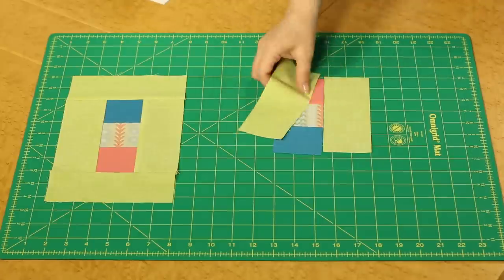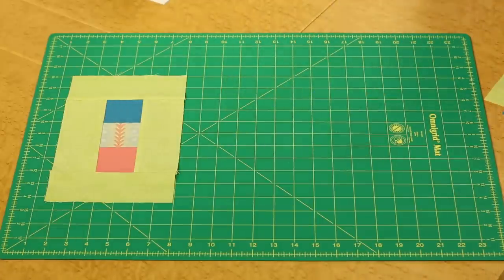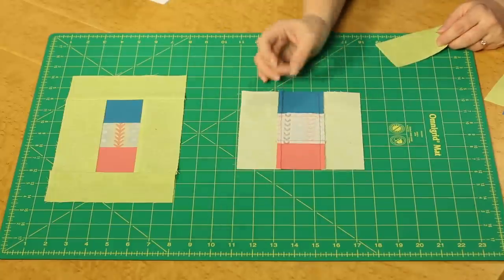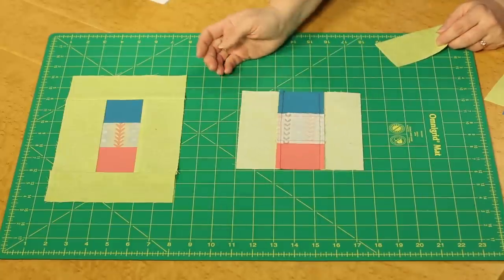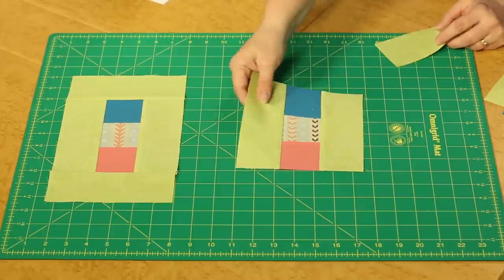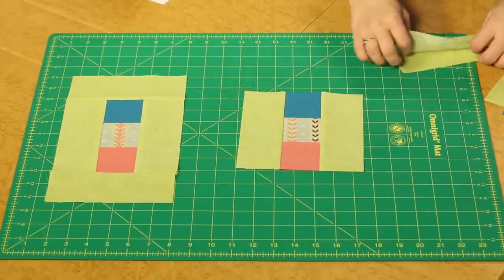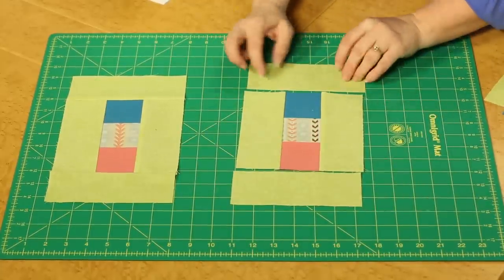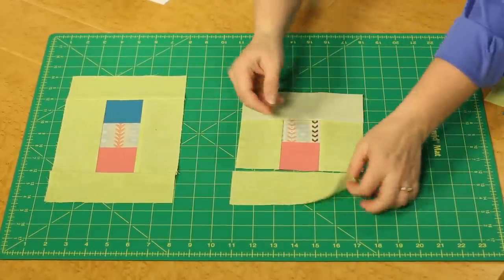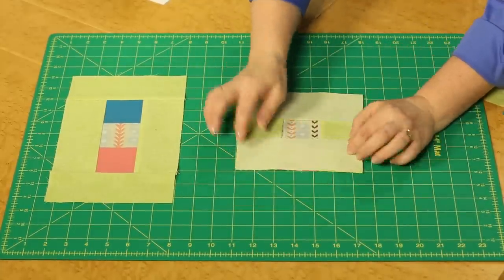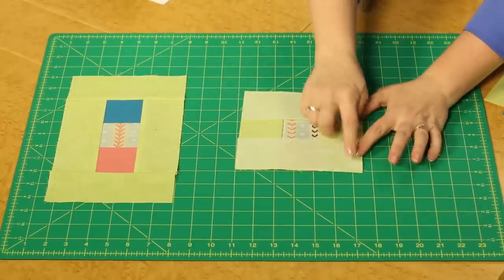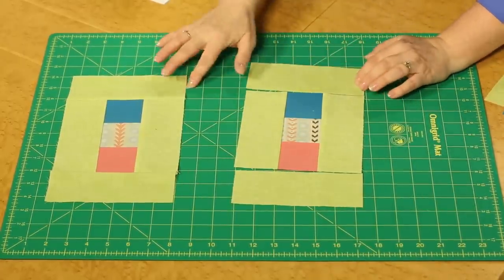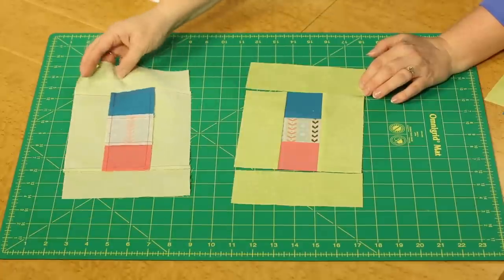And then once you've gotten that accomplished you would be at this point. You can see here that the seam allowances are pressed toward those rectangles nice and neat. And then the last two rectangles top and bottom, again seaming right sides together, you could place those and then seam a quarter inch from each end, flip out, again pressing your seam allowances toward the outer edge and you can see that is done here.